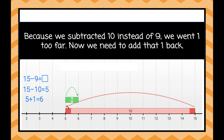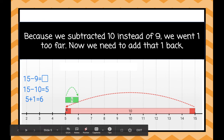Then we subtracted 10, so we went one too far. We need to give one of those back. So we're going to jump back 1. Now we're at 6.